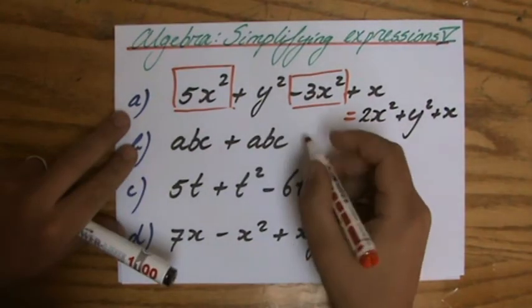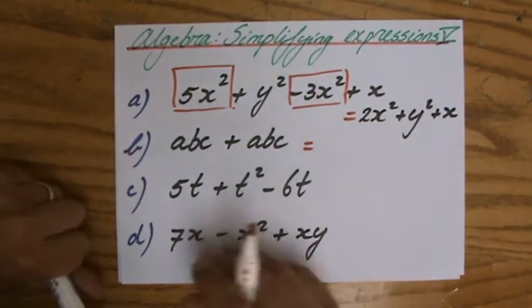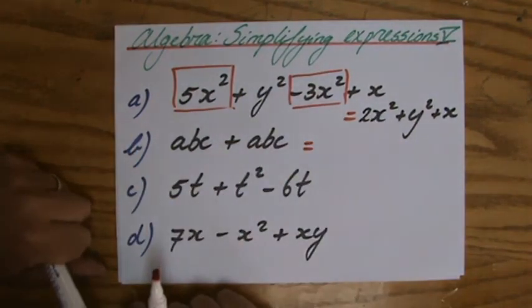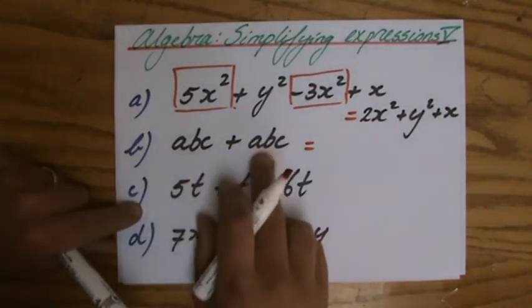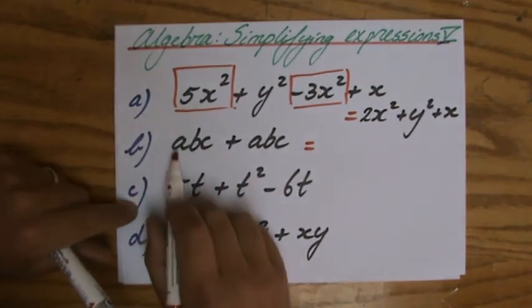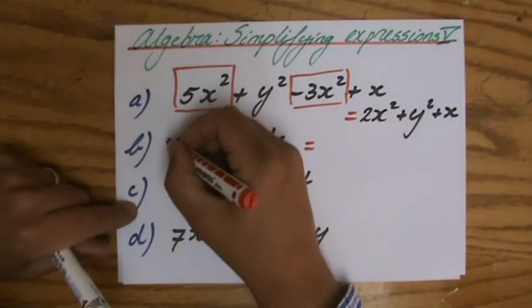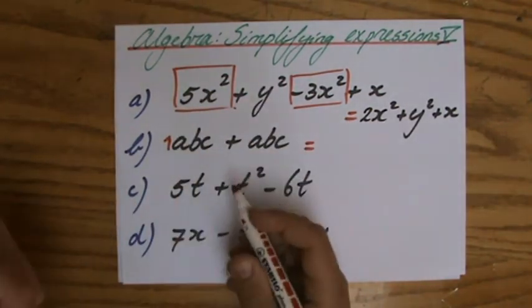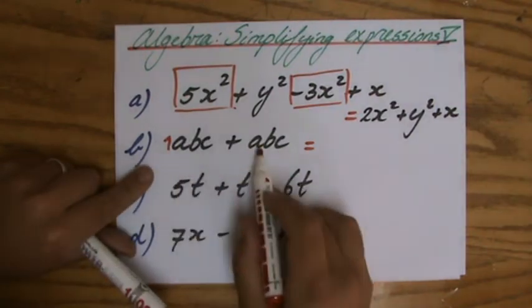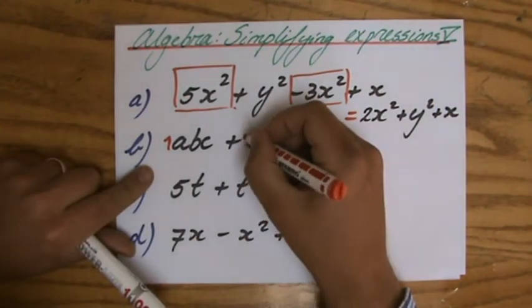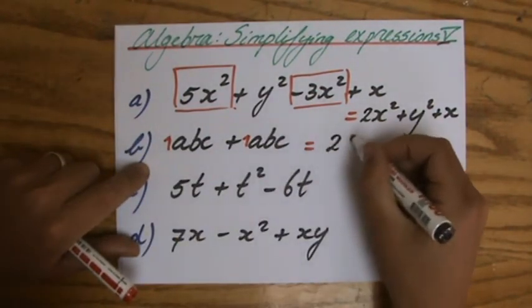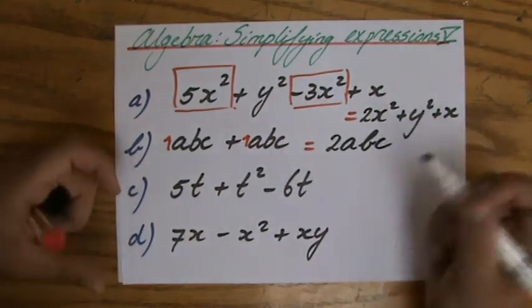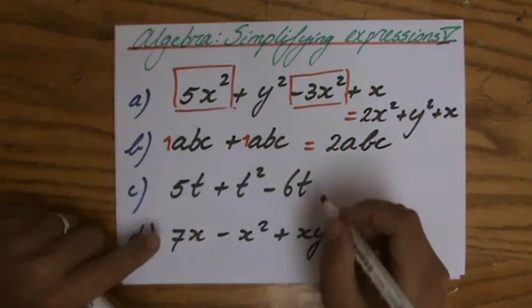The next question: abc plus abc. Two terms, and I have to simplify it. Is the combination of letters the same? abc, abc—yes, it is. What is the coefficient here? Well, it's a 1, so 1abc. How many abc's do I have here? Another one. So if I simplify it, the answer is 2abc.